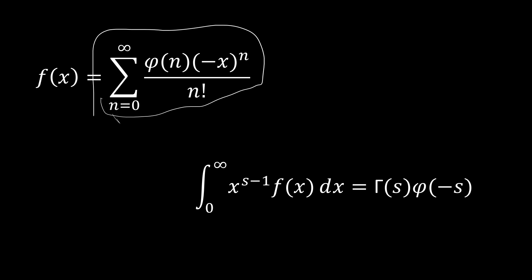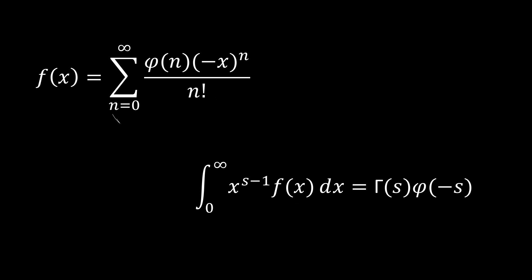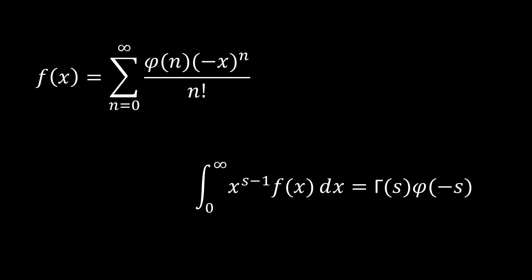One thing we have to note is that φ(n) has to be a well-defined continuous function. We can't just say φ(n) takes certain values for positive numbers and is always zero for negative numbers so the integral always goes to zero. We also have to verify that the integral converges, because sometimes it'll give us a value here even though the integral itself does not converge. Let's check out some problems tackled using this method.